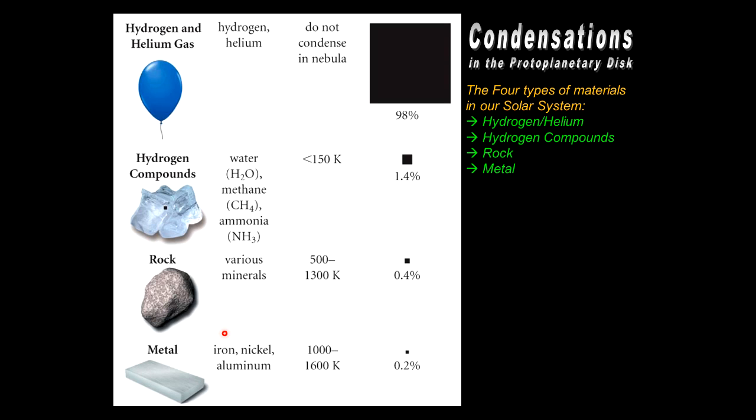So we're talking about things like iron, nickel, aluminum, so metallic heavy elements. What's important to understand is they have different condensation temperatures. In addition to that, they have significantly different relative abundances.